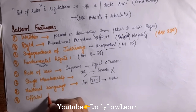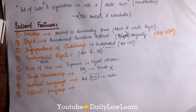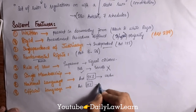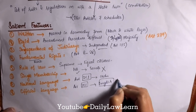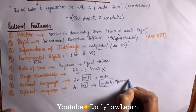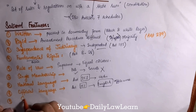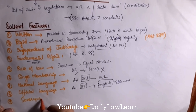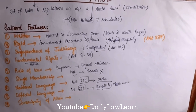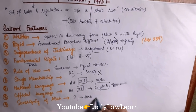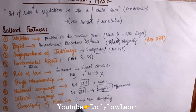Next is national language. According to Article 251 of the constitution, Urdu is the national language of Pakistan. The next is official language — according to Article 251, English is the official language of Pakistan for office work.